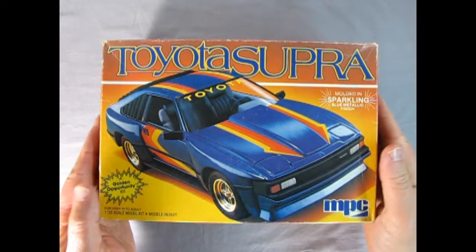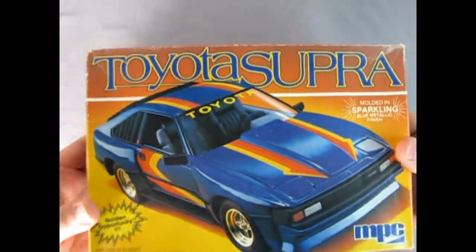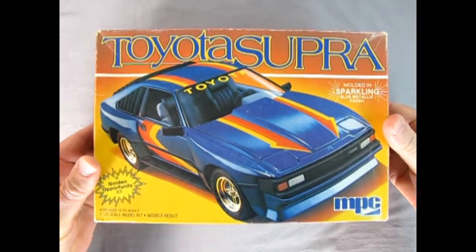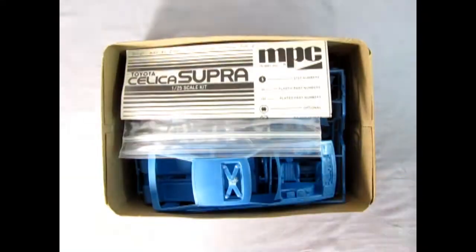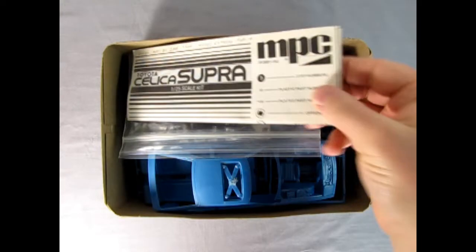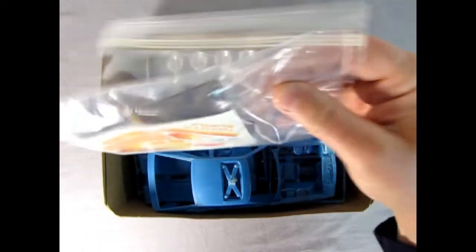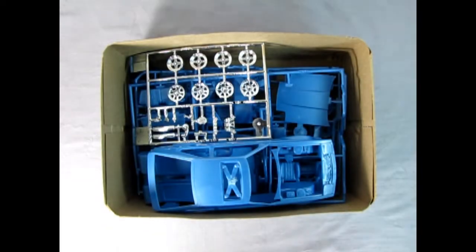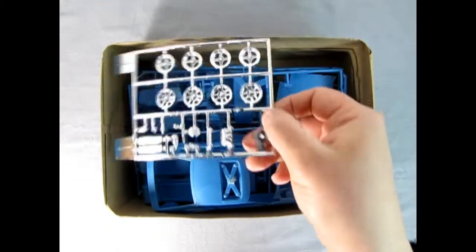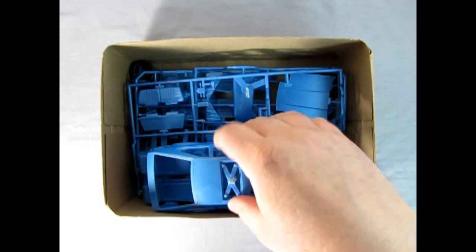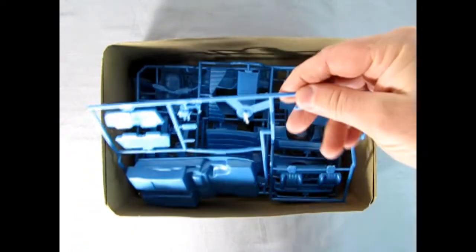Now let's take the lid off this model kit and see what we have inside. It is a bit of a tight fit. Now we get the instructions in here. This model is secondhand, so a lot of parts are put in a ziplock. There's the decals and the smoke colored windows. Here's our chrome parts, and then we get that nice sparkling metallic blue color for our plastic.